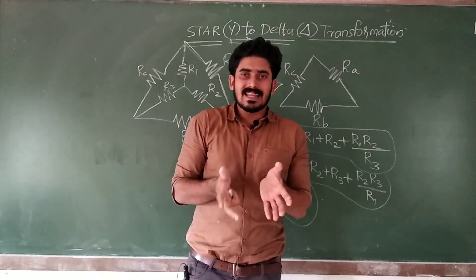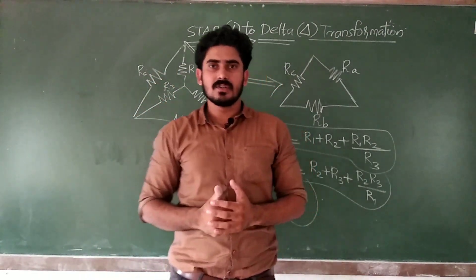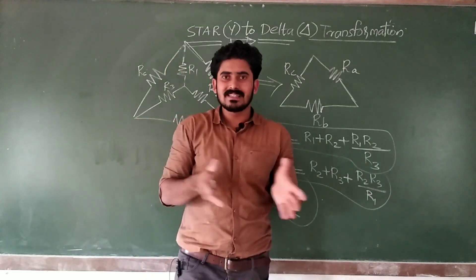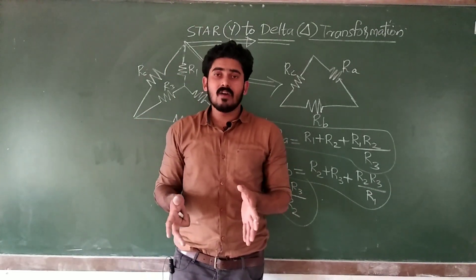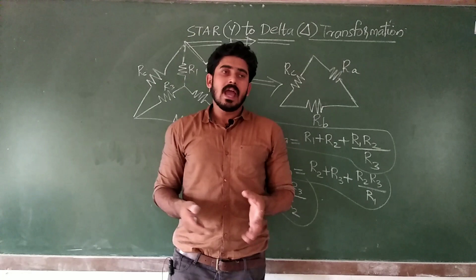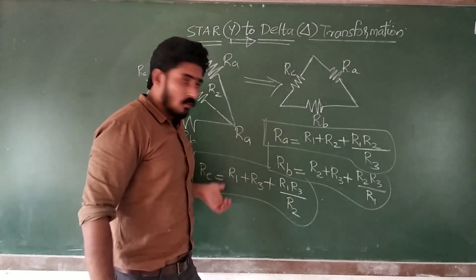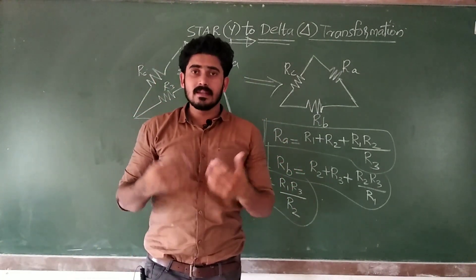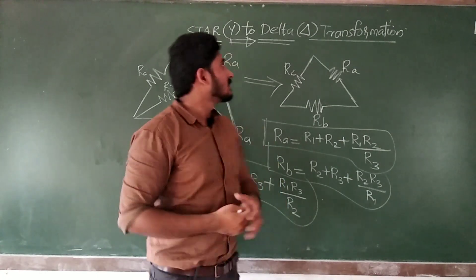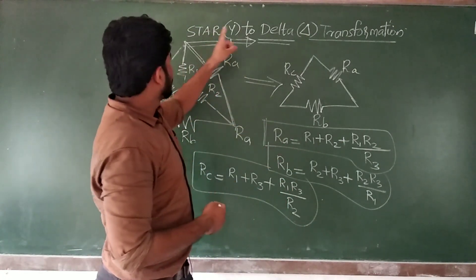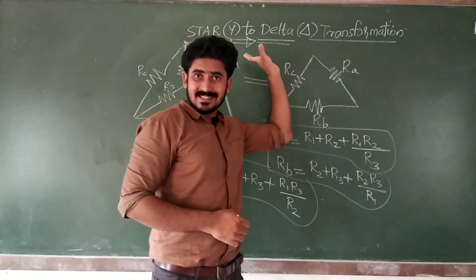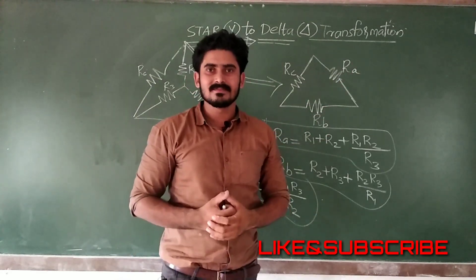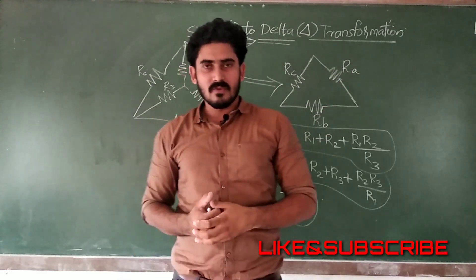So this is the way you can convert a star connection into a delta connection. Remember, while converting from star to delta, the values of resistors are changed, and the change can be found using these formulas. I hope you understood this concept. In the next lesson, we will discuss the delta to star transformation. Thank you for watching the video.